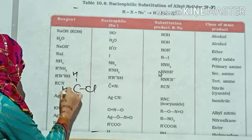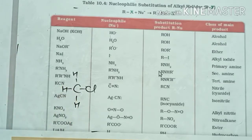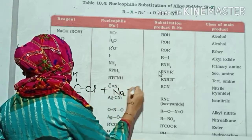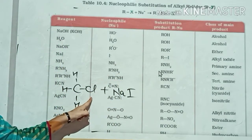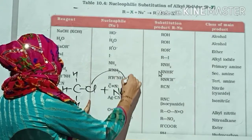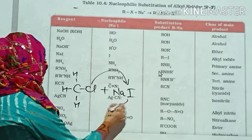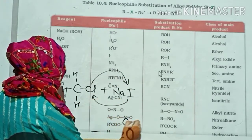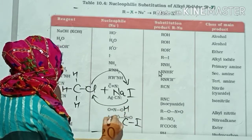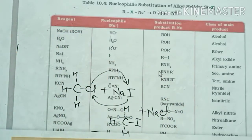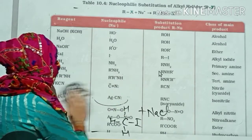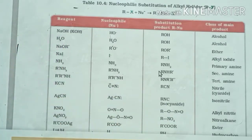For example, if you have chloromethane and you use NaI, iodine (I) will replace the chlorine. The chlorine will go with the sodium. So it gives iodomethane plus NaCl. This is the kind of substitution taking place. You can refer to the table for more nucleophile examples.